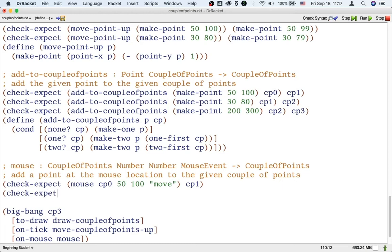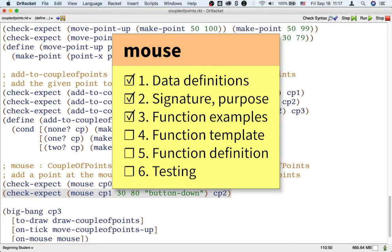Okay, so that's one example. Let's do at least another example. What if we're currently at CP1, and the mouse is clicked at CP1? Well, then, we should get CP2. So, again, button-down is one of those possibilities of a mouse event. It means that someone pressed down the mouse button, and that's a good excuse to add a new point to the current world. So, those are two examples. Maybe that's enough examples. Let's see. Let's move on to writing the template.